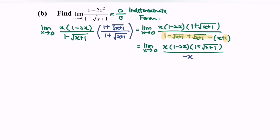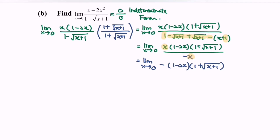We have a common factor of x in the numerator and denominator, so we can cancel it. Rewriting, we get the limit as x approaches 0 of negative (1 - 2x)(1 + square root of (x + 1)). Substituting 0: (1 - 0) gives 1, and square root of (0 + 1) gives 1, so we have 1 plus 1 equals 2.